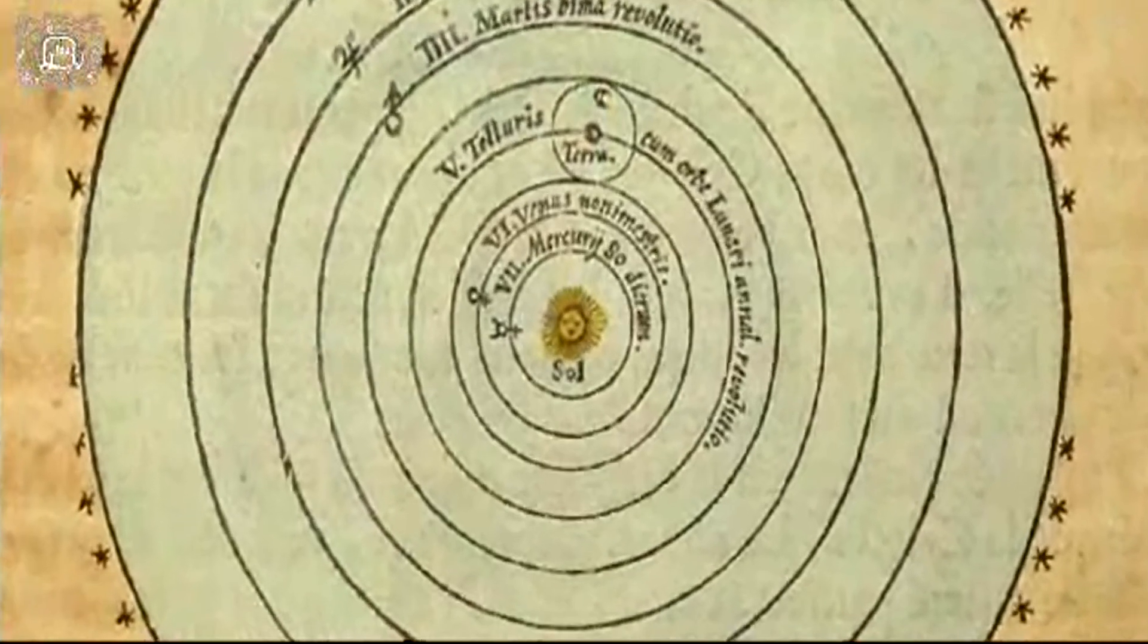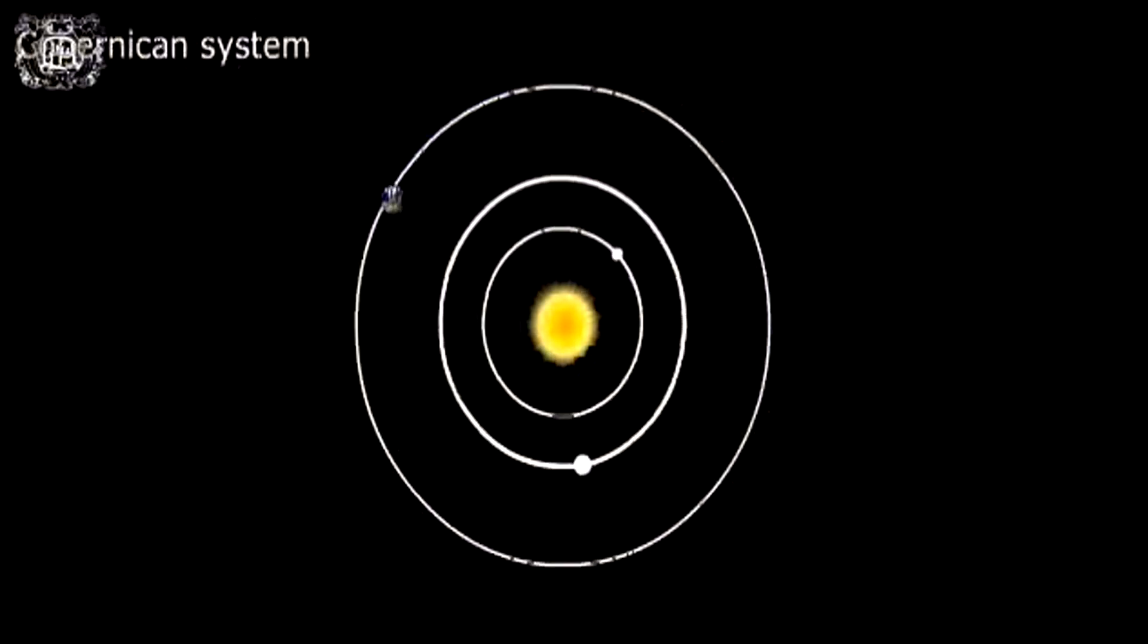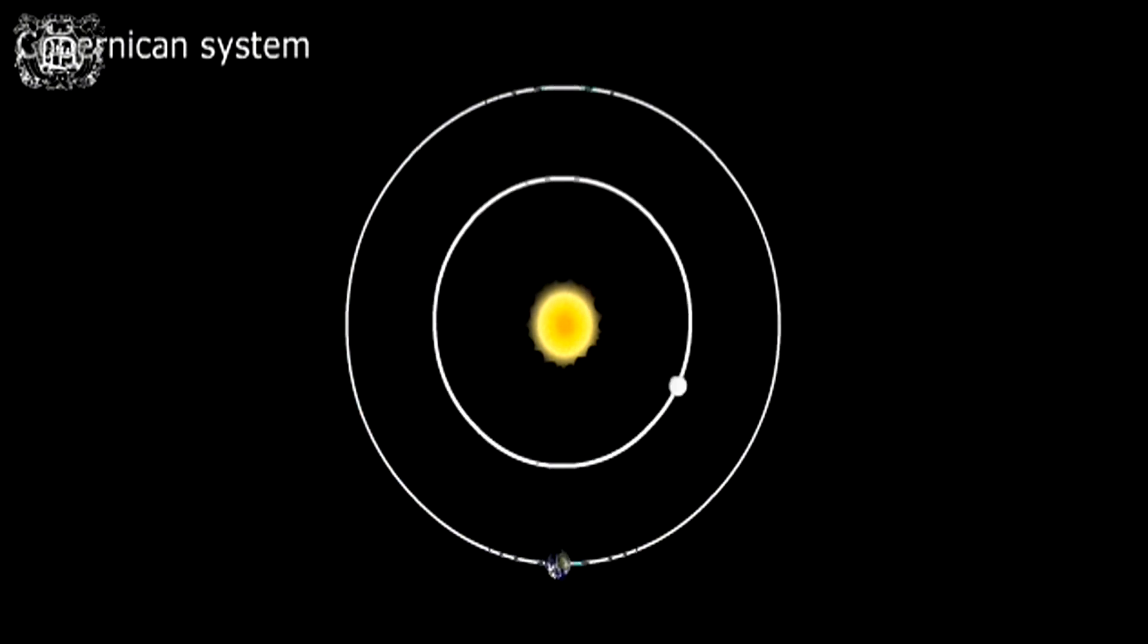In the Copernican system, instead, the Sun is immobile at the centre of the universe, while all of the planets, Earth included, rotate around it. The orbits of Venus and Mercury are thus found within the Earth's orbit.